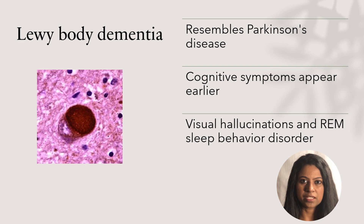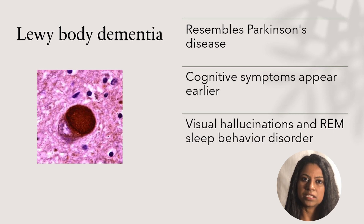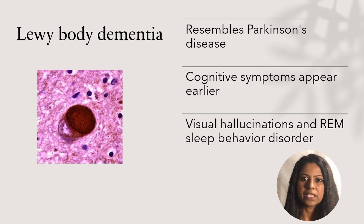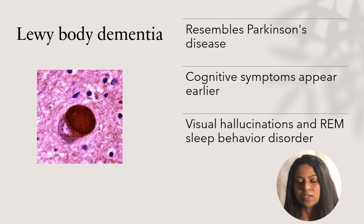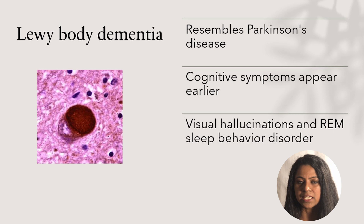Lewy body dementia is clinically and pathophysiologically similar to Parkinson's disease. It can be differentiated by the timing of dementia and movement disorders. In Lewy body dementia, dementia appears within the first year of parkinsonism, while in Parkinson's disease, movement disorders appear before the onset of dementia. Lewy body dementia is also characterized by the presence of REM sleep behavior disorder — for example, acting out dreams — and visual hallucinations.